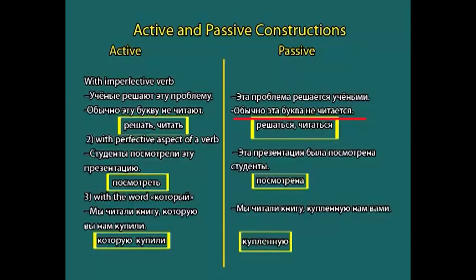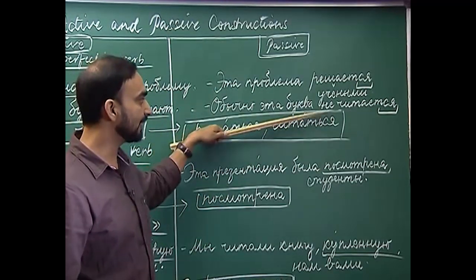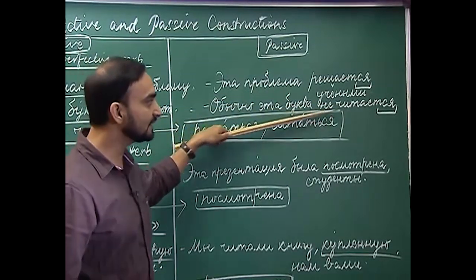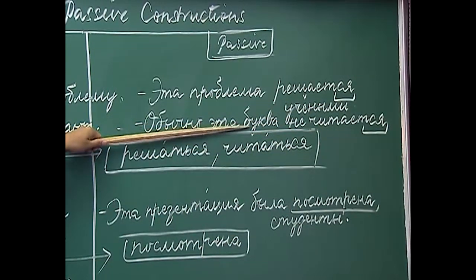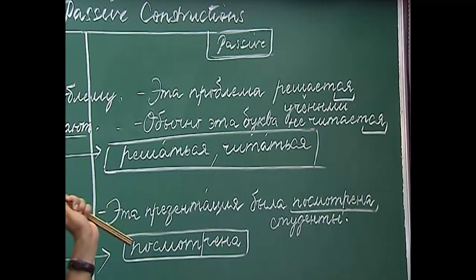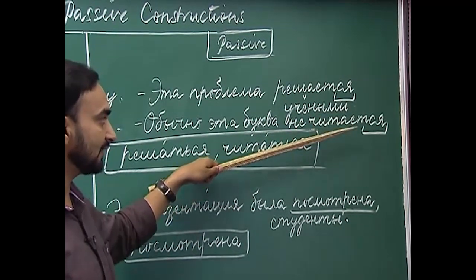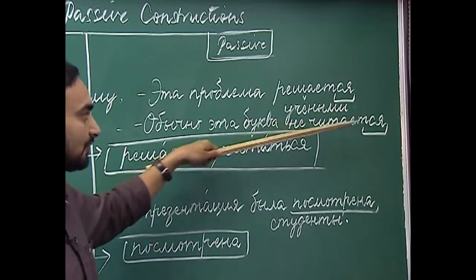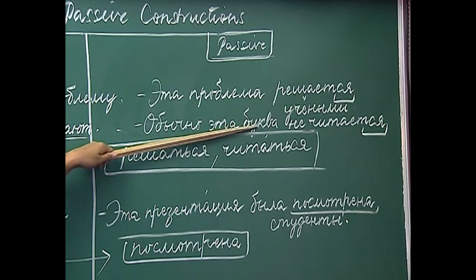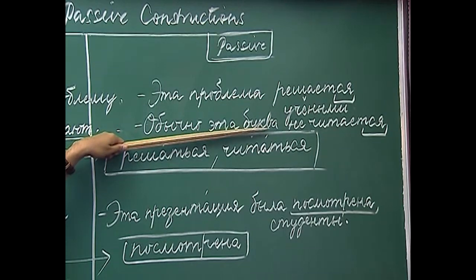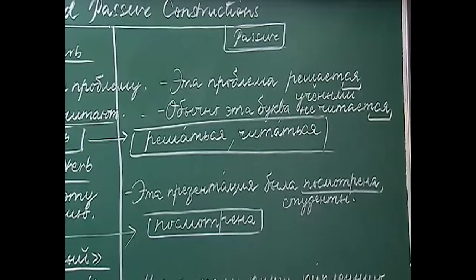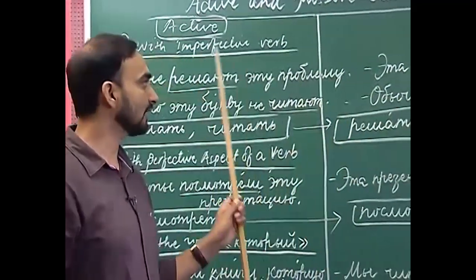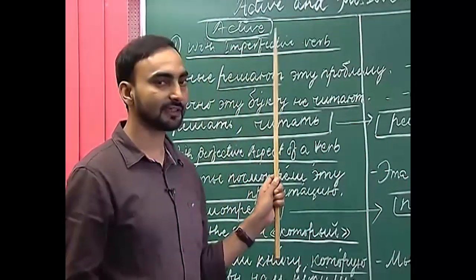The next example was 'Obychno etu bukvu ne chitayut' — Usually this letter is not pronounced. To change this into passive: bring the object to the beginning and use the reflexive verb: 'Obychno eta bukva ne chitaetsya'. Here the object 'eta bukva' becomes the subject, and 'chitaetsya' is the reflexive form of 'chitat''. The verb form agrees with the number of the new subject. This is how we change the active construction into passive when it has the imperfective aspect of a verb.